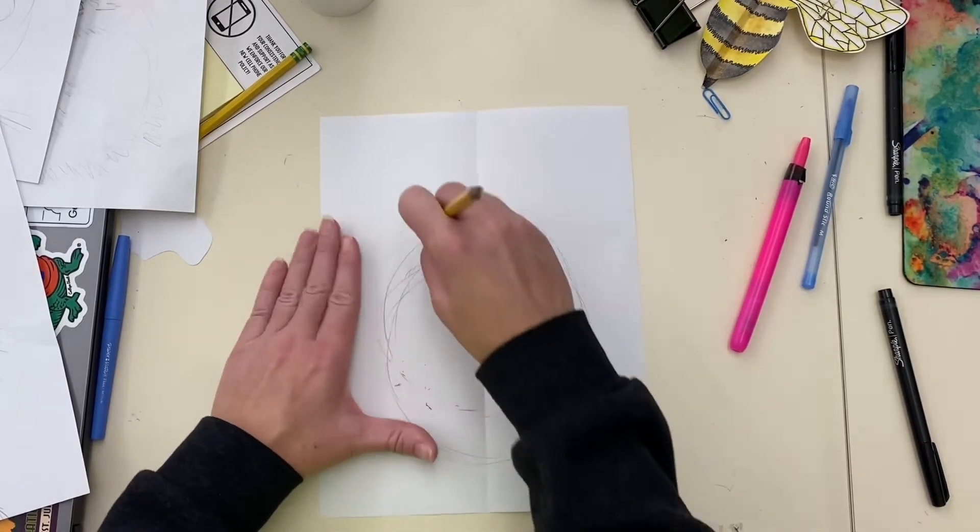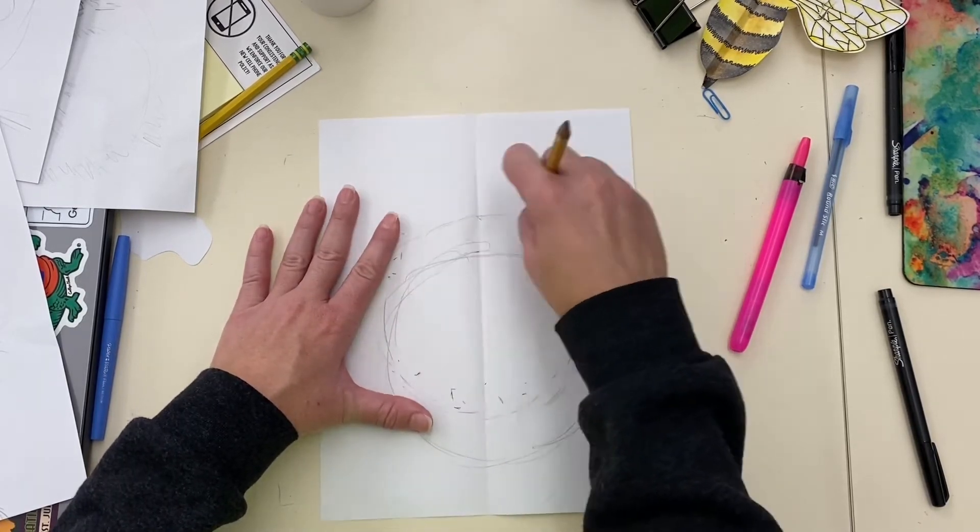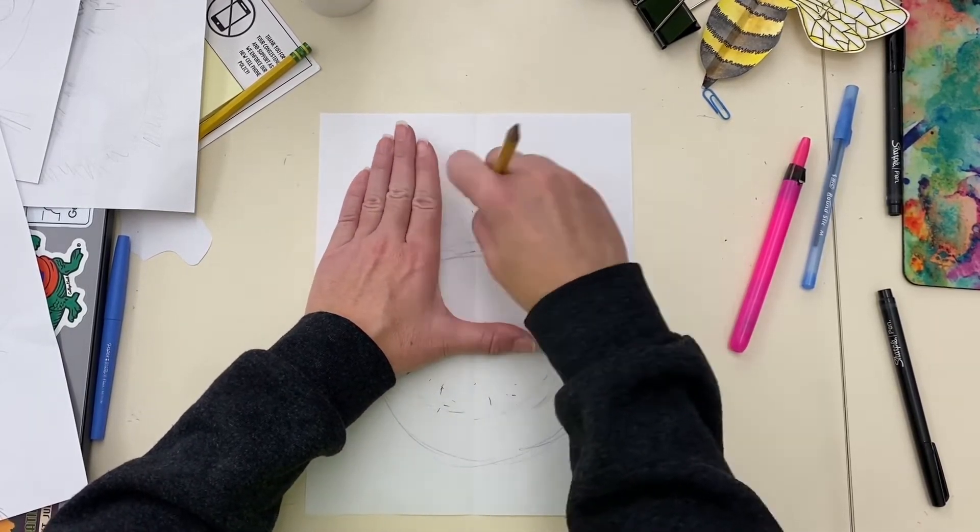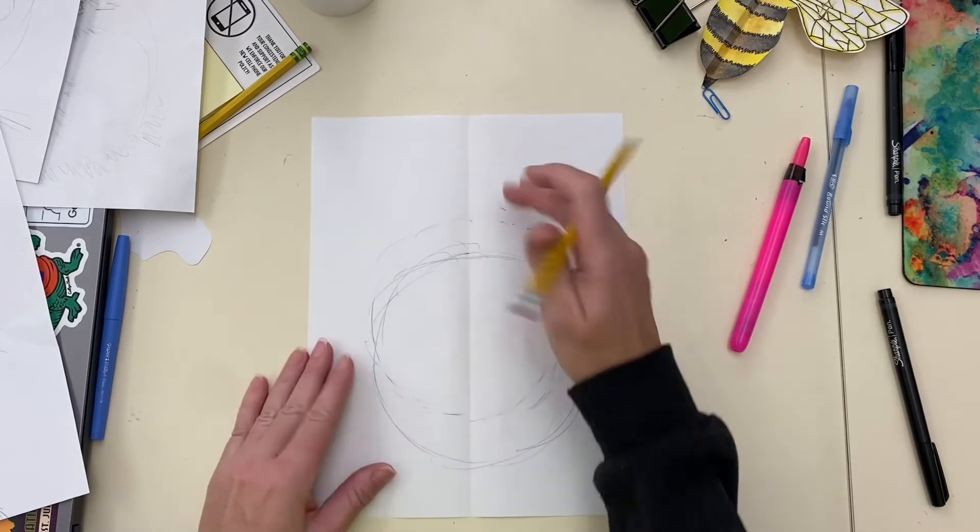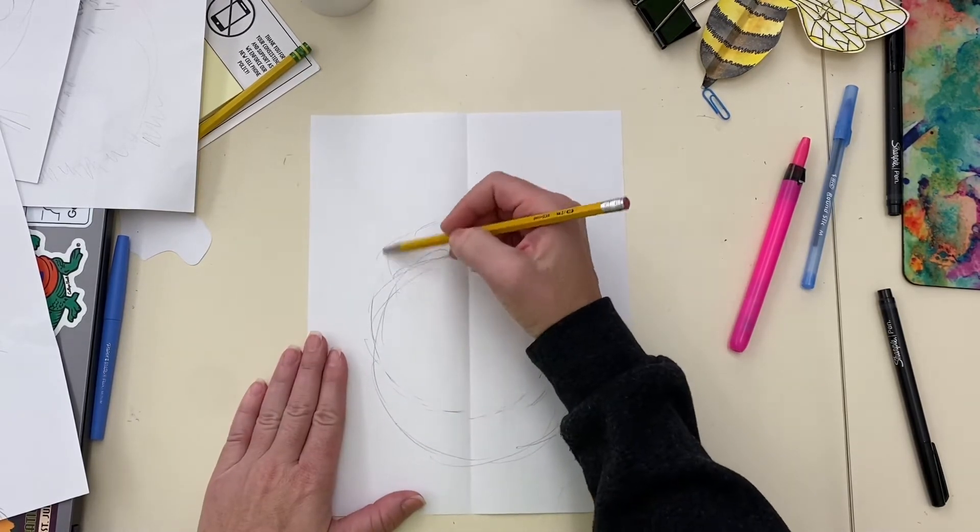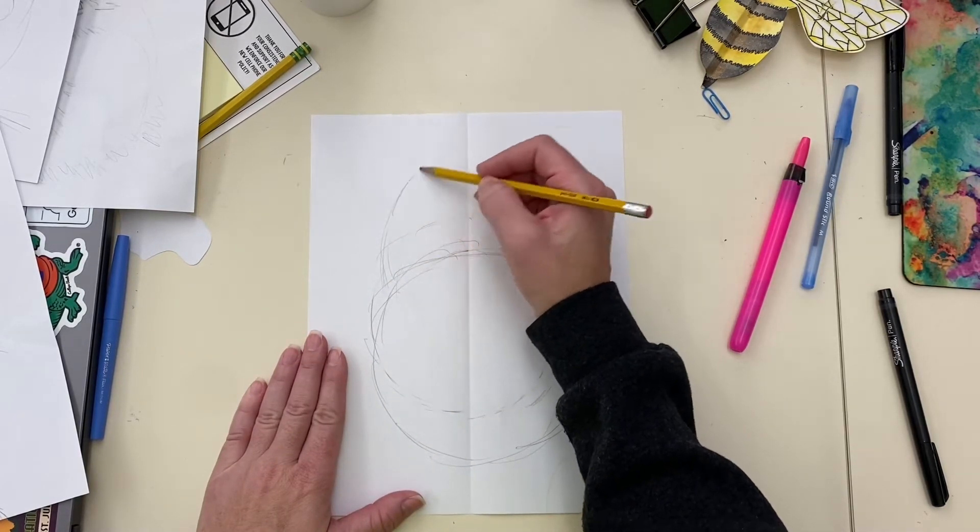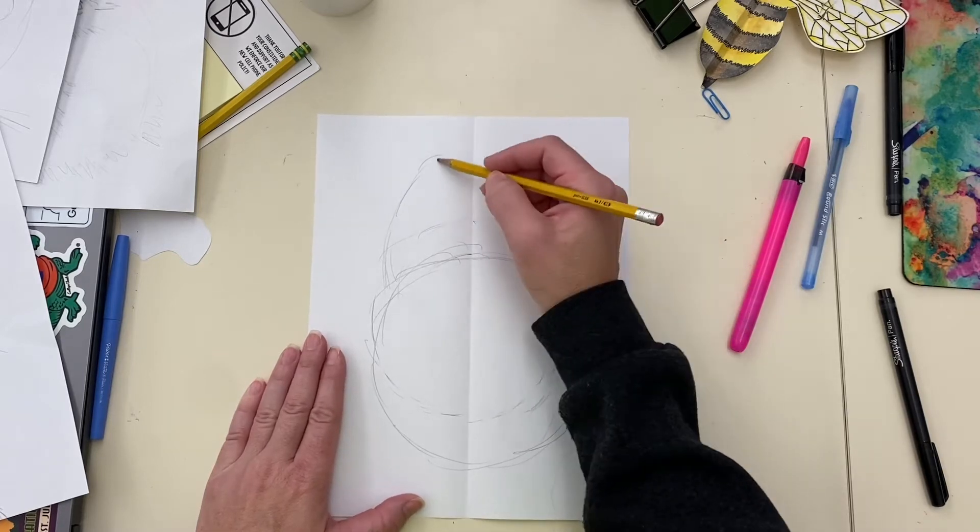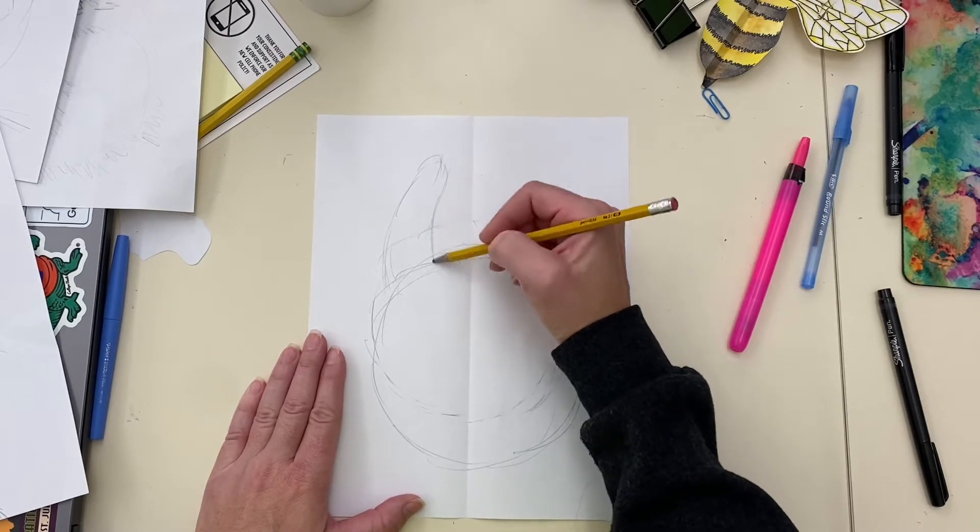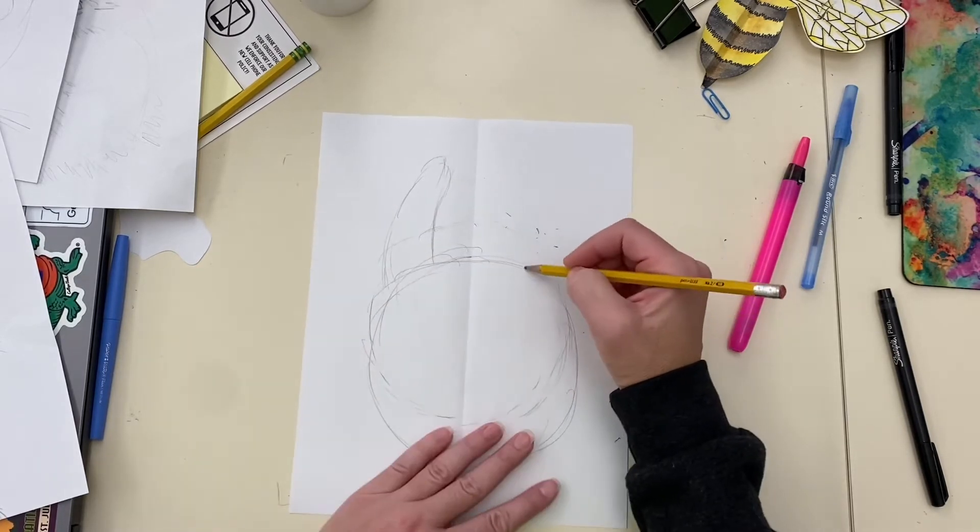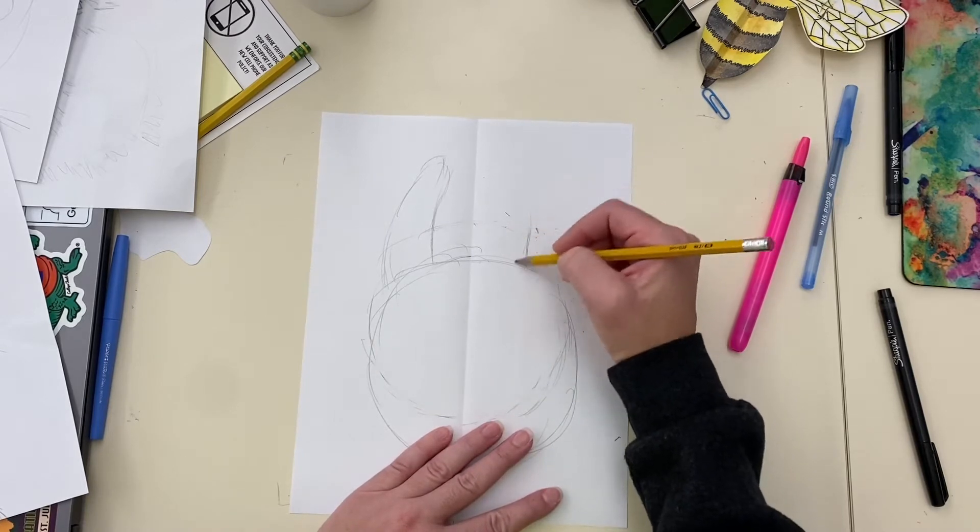Then I'm going to draw the general shape of the ears. Okay the ears. The llama has big ears. Even though I'm not going to worry about this side I'm just trying to get the shapes down.